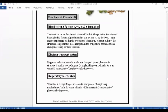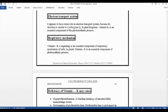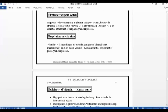Electron transport system. It appears to have some role in the electron transport system because of its structural similarity to coenzyme Q. In plant kingdom, vitamin K is an essential component of the photosynthetic process.